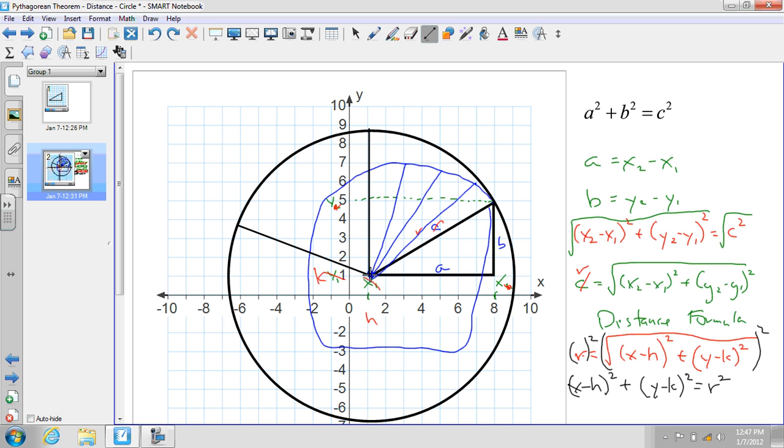They're all the same. So I fixed my hk, I fixed my r, and I'm just swinging that line around on the axis of the center right here, and I end up with a circle.